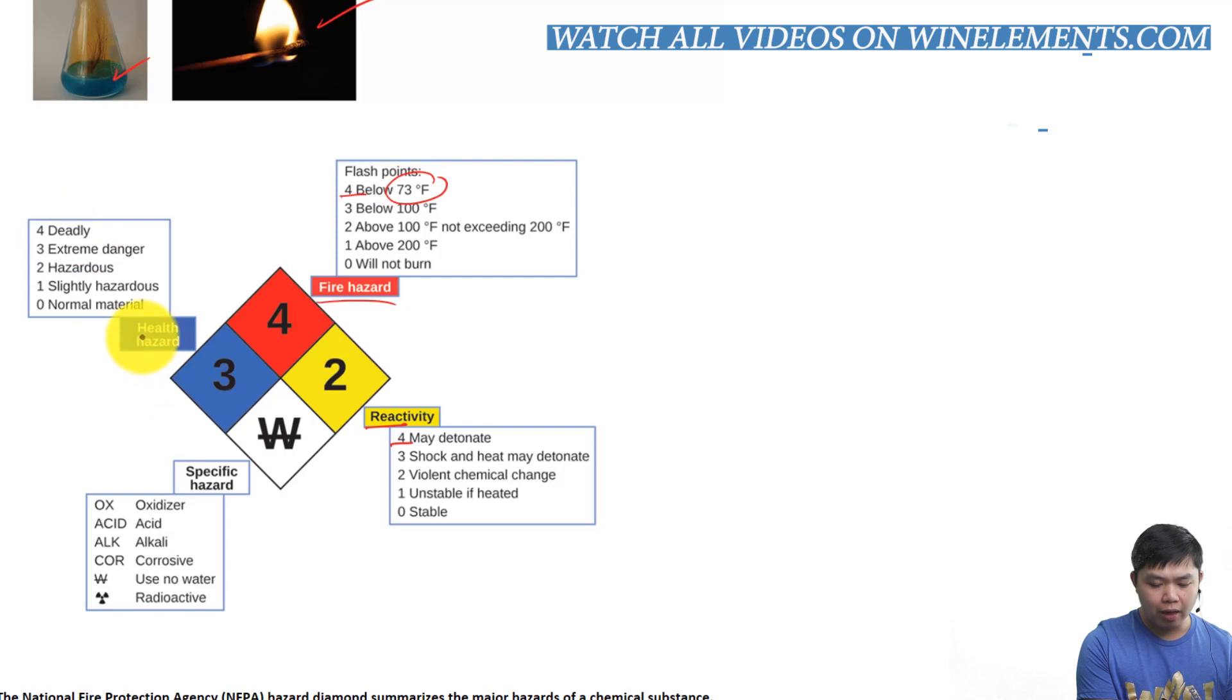And then here we have health hazard. With number 4, it is deadly. That means it can kill you. So whenever you see a chemical that has a health hazard of number 4, it's time to be very careful and get away. Call your local hazard agency so that way they can deal with it. And here we have another one, which right here is very specific. For example, W. Guess what W stands for? Water. So this chemical will react with water. So don't get water near it. And then we have acid, we have alkali, we have oxidizer, and we have radioactive.